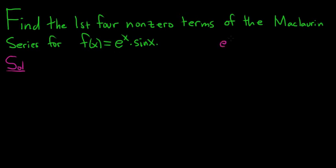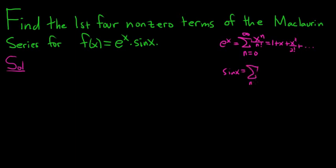The Maclaurin series for e to the x is the infinite sum as n runs from zero to infinity of x to the n over n factorial. If you write this out, it would be 1 plus x plus x squared over 2 factorial, et cetera. For sine x, since sine is an odd function, it has only odd powers of x in its Maclaurin series. So it would be negative 1 to the n, x to the 2n plus 1 over 2n plus 1 factorial. If it was cosine, you'd have even numbers, so it would be 2n instead of 2n plus 1.